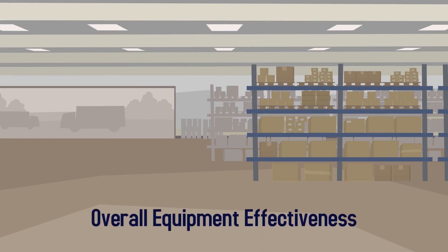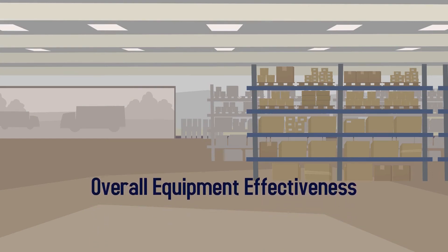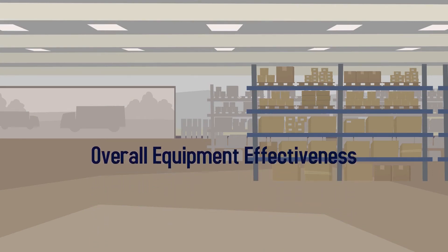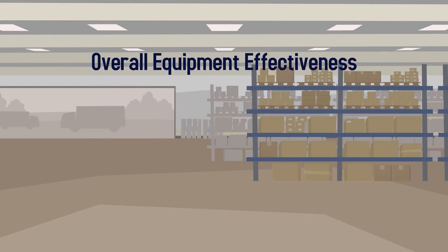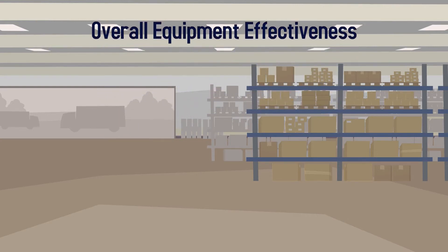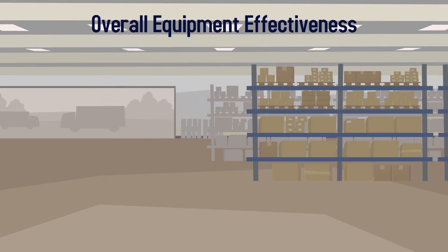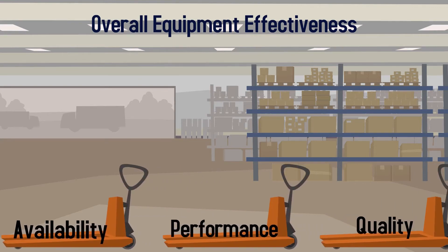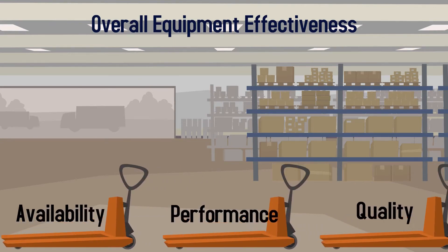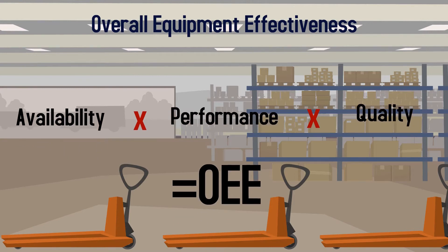Overall Equipment Effectiveness, or OEE, is a manufacturing metric used when determining the productivity of a factory or machine. OEE is comprised of three separate but measurable components: availability, performance, and quality. Multiplying the three components together is how overall equipment effectiveness is calculated.